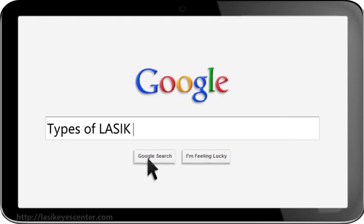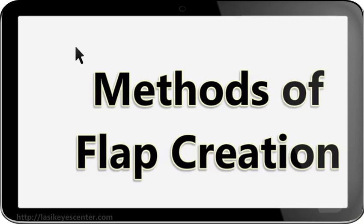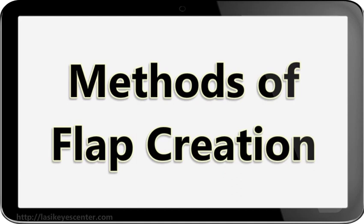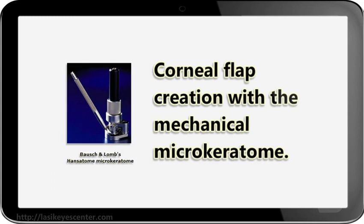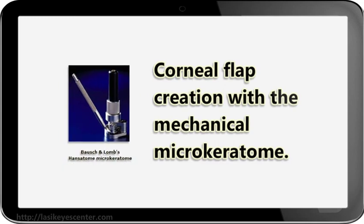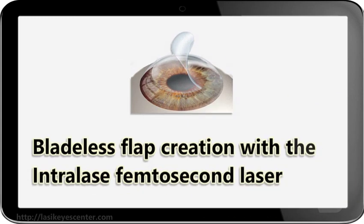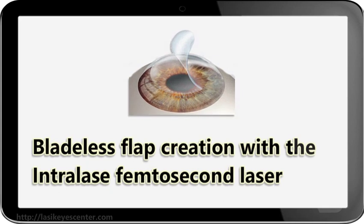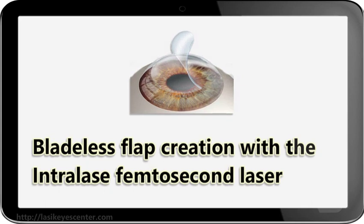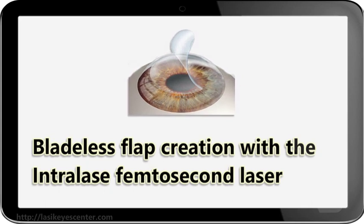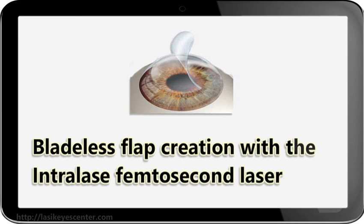Types of LASIK. LASIK procedures differ in the way the corneal flap is created. The corneal flap has traditionally been created with the mechanical microkeratome in the last 15 years. Instead of using the microkeratome, the Intralase laser is used to cut the flap. The Intralase method virtually eliminates all sight-threatening LASIK complications arising from the use of the microkeratome.